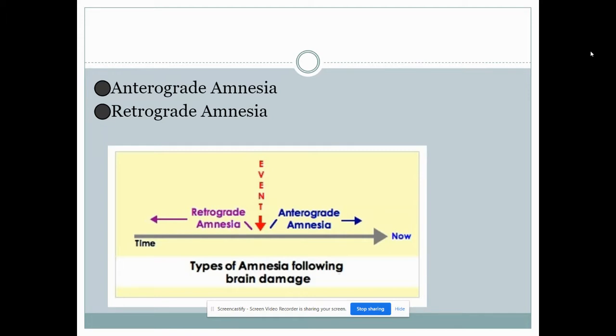Retrograde amnesia is the opposite and retrograde amnesia is when old memories are forgotten before the event. So when a person forgets their name or forgets where they live or who they are based on the amnesia-inducing event.